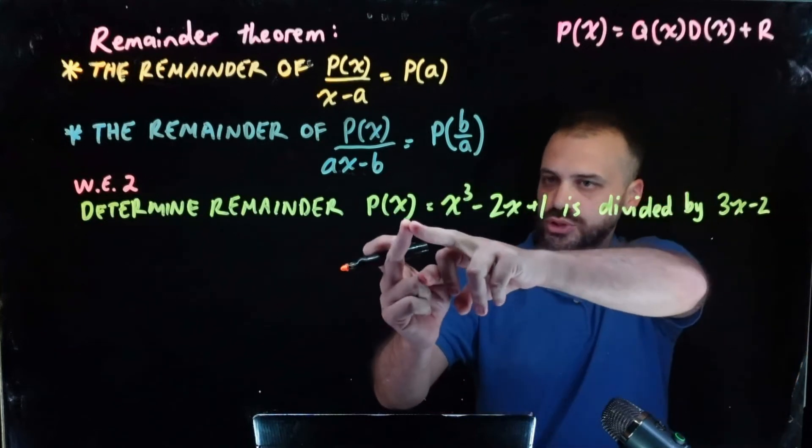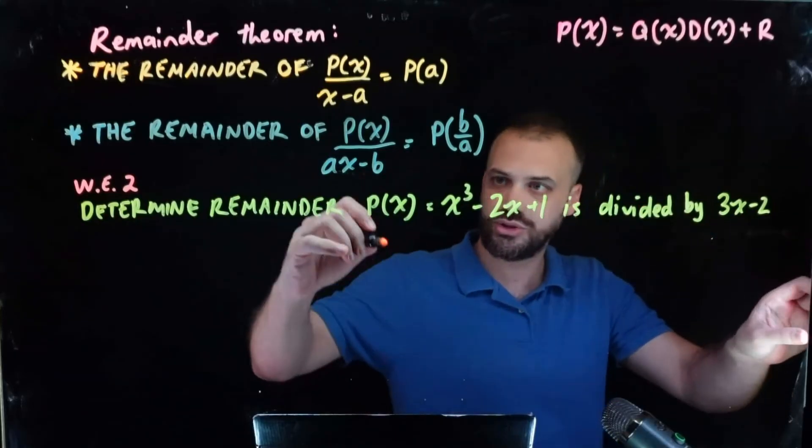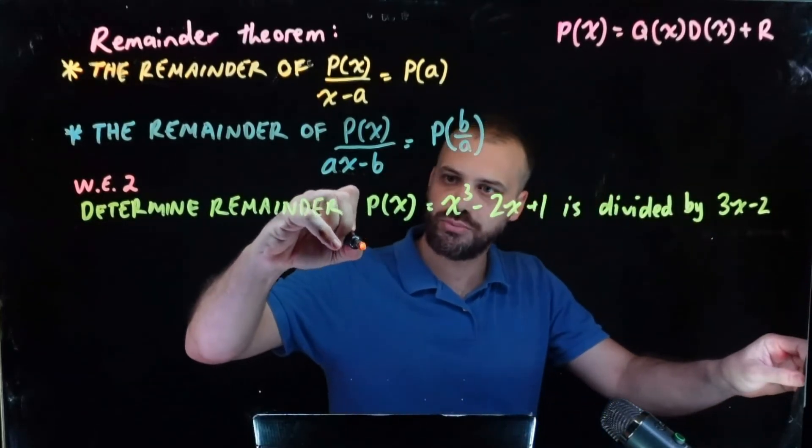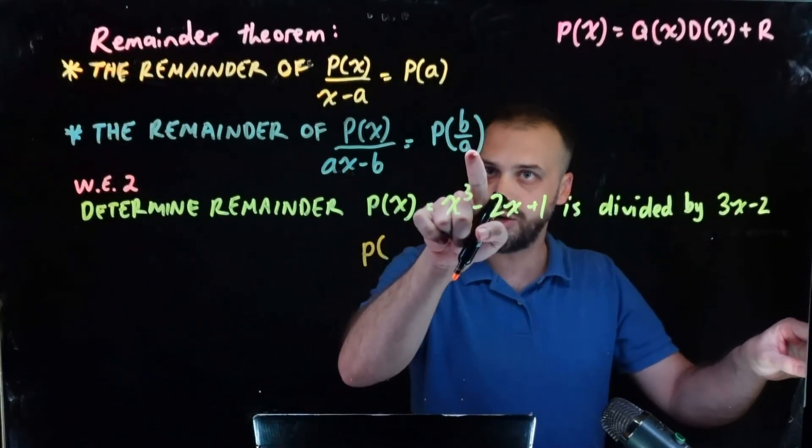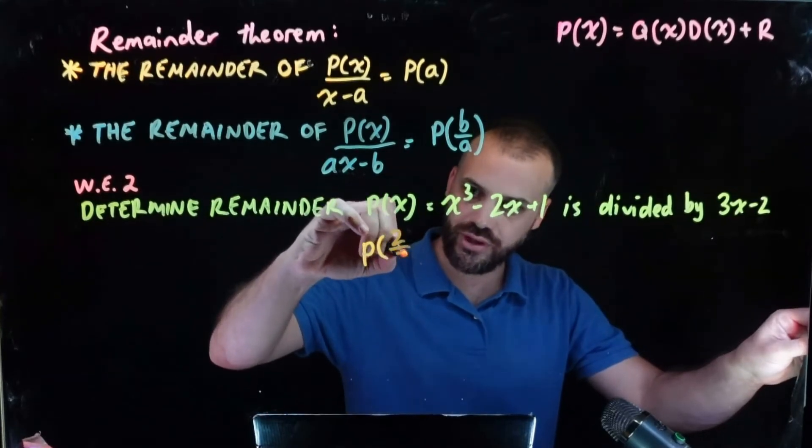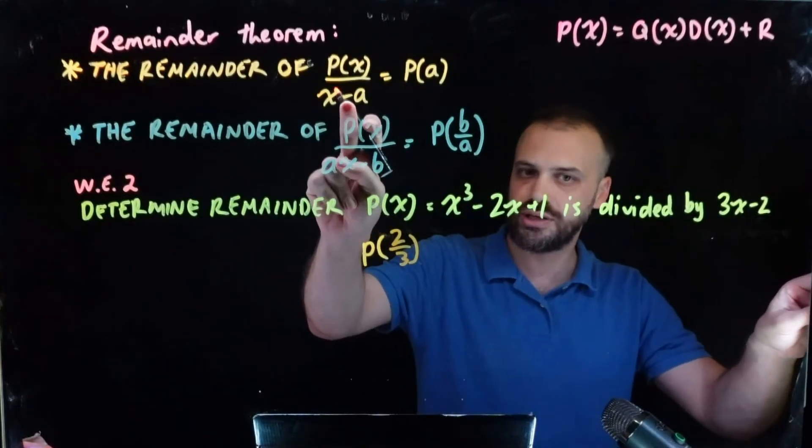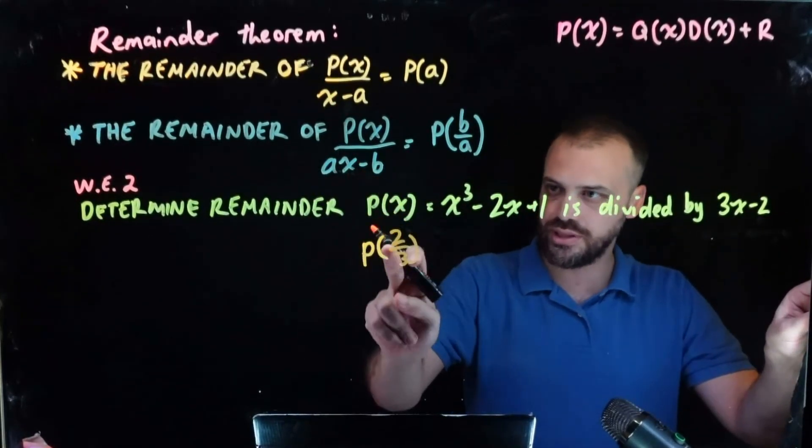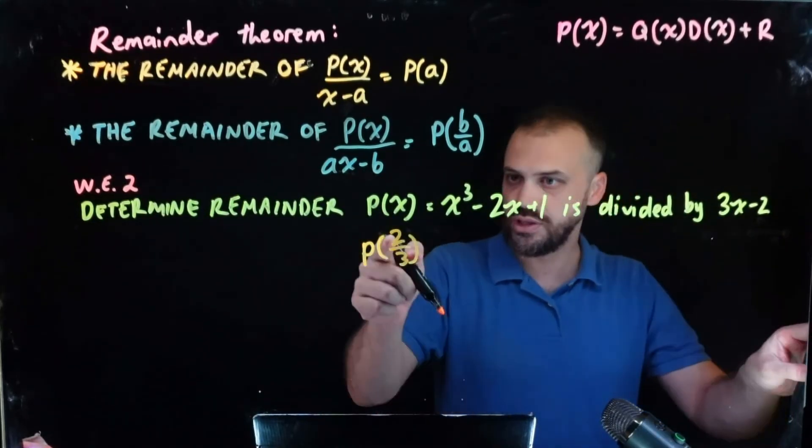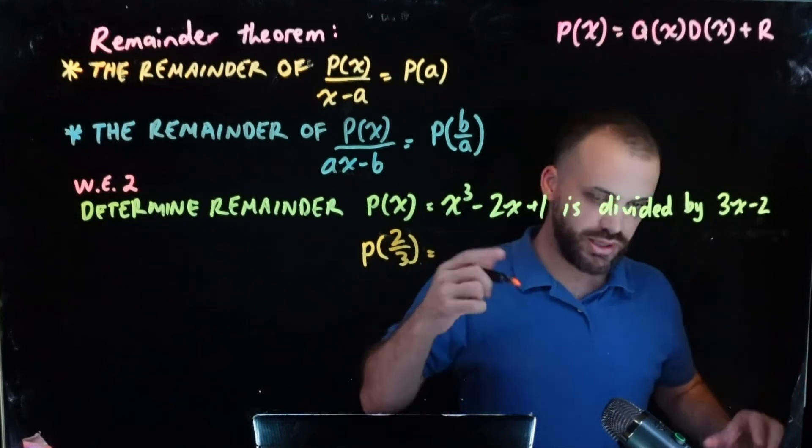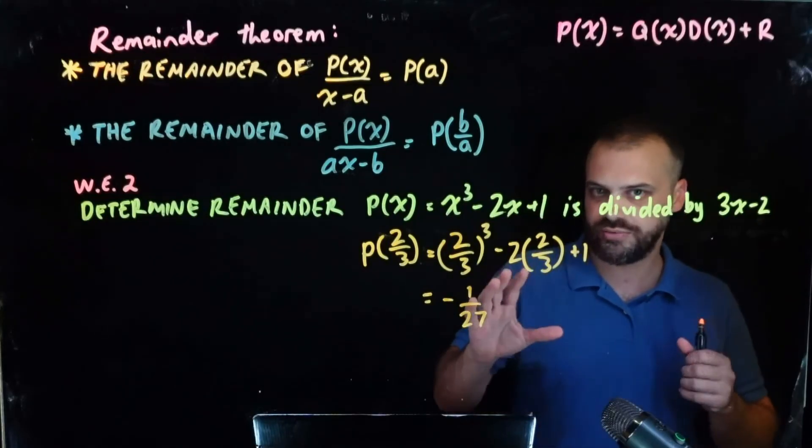Okay, so another worked example here. We're determining the remainder when that is divided by 3x minus 2. So to find that remainder, we do p, and then we sub in b over a. So we sub in 2 over 3. And you might be screaming out negative 2, but no. The same thing that happened here happened here. Positive 2, because that negative here becomes a positive. So sub in 2 over 3, put 2 over 3 in here, here, solve. So the answer to that is negative 1 over 27.